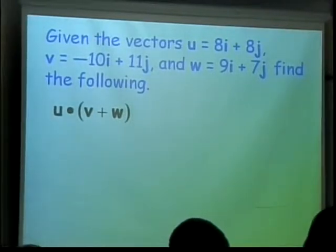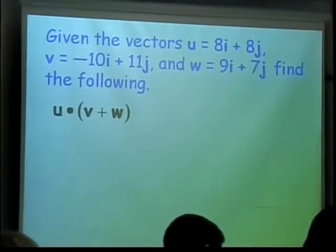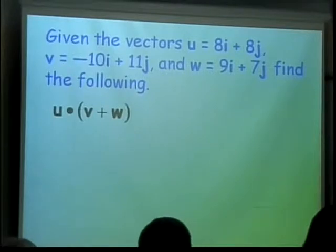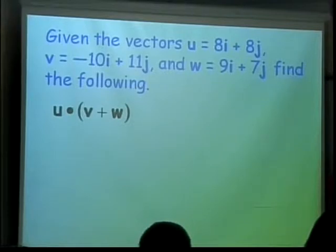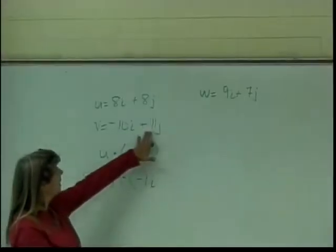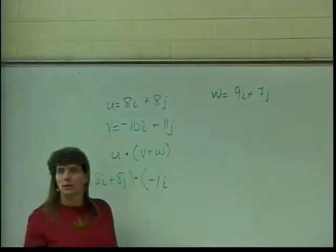The first problem is asking me to do u·(v+w). v+w are in parentheses, so I add them together first. How do I add v and w? I add like terms. So I have u, which is 8i plus 8j, dot product with negative 10i plus 9i, which is negative 1i, and 11j plus 7j, which is 18j.